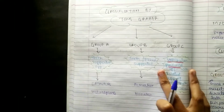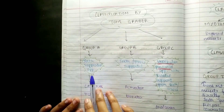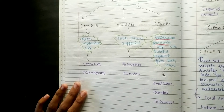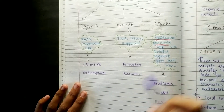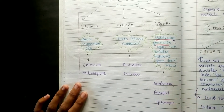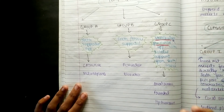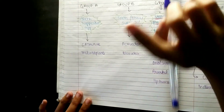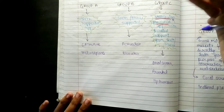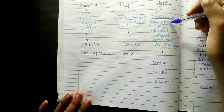Coming to the second classification — the classification given by Tom Graeber. They divided appliances into three groups: Group A, Group B, and Group C. Group A is teeth supported. Group B is tissue supported — that is teeth and tissue supported. Group C is vestibular position appliances, with isolated support from tooth and tissue.